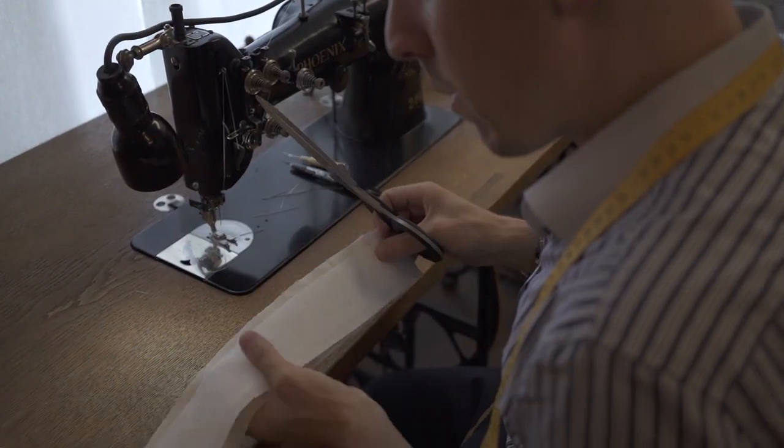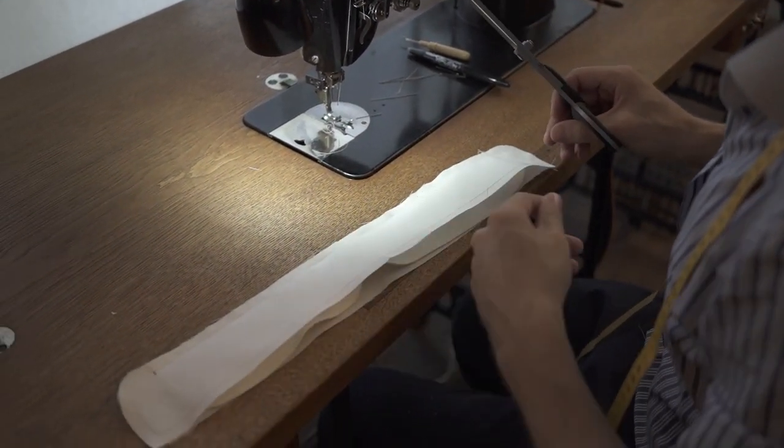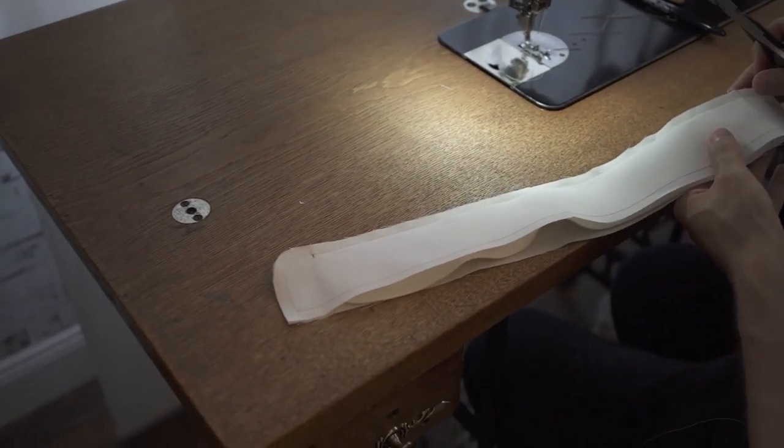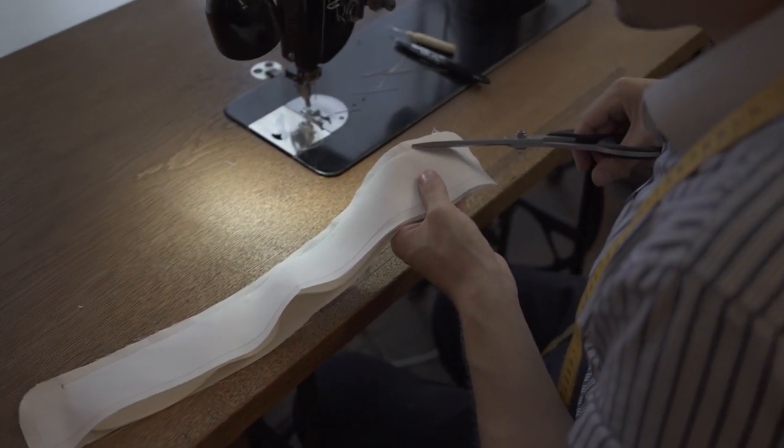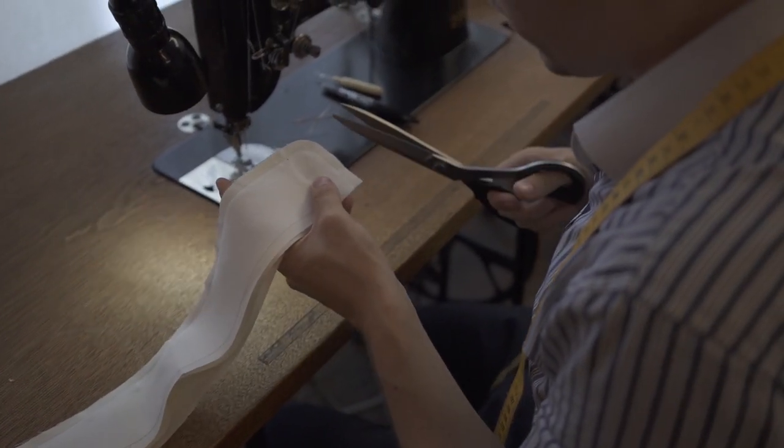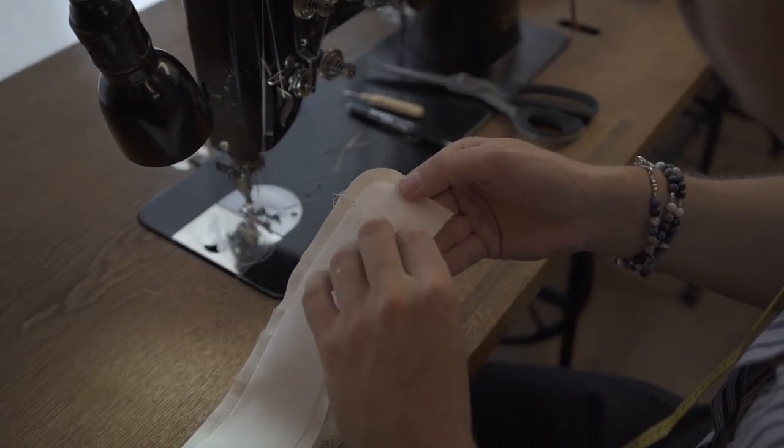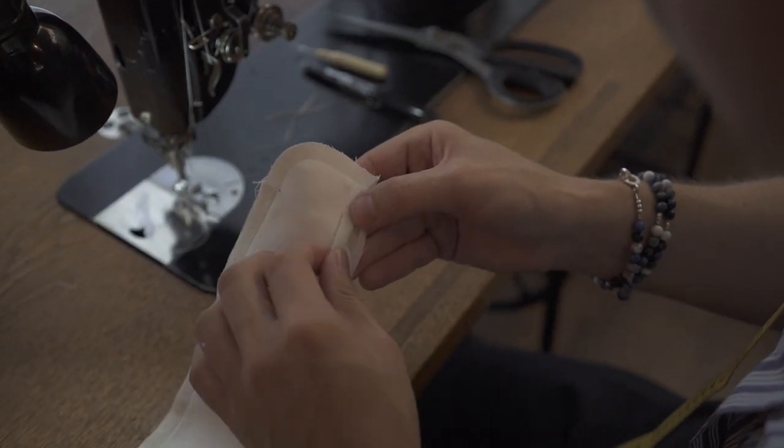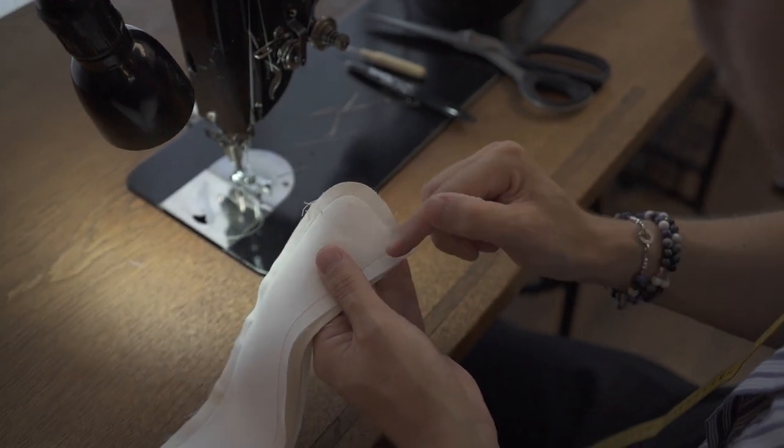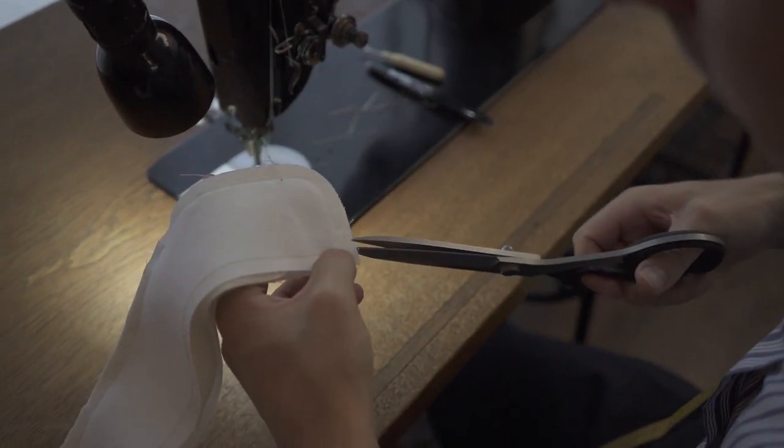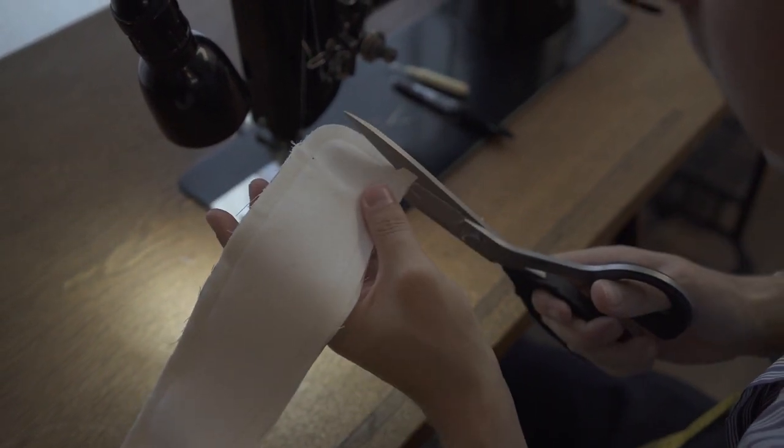As with the collar I now also cut back the seam allowance very close to the seam. With modern collars I would leave 0.4 cm of seam allowance. But here we have to cut back a lot. Except here where the seam allowance starts and ends at the collar stand. Here I leave the complete seam allowance. It makes turning and a neat fold at the end much easier.